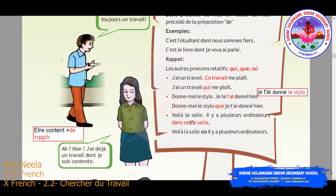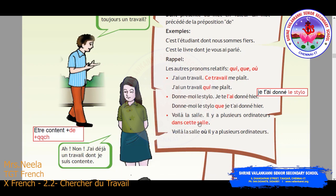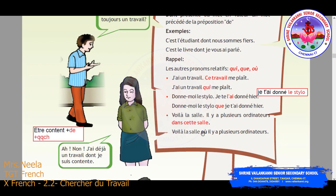The next one: 'voila le saal, il ya pluser ordinator.' Here 'don set saal' is the place mentioned and it is repeated. So the sentence becomes 'voila le saal où il ya pluser ordinator.' So 'où' replaces 'don set saal', meaning where there are many ordinateurs.